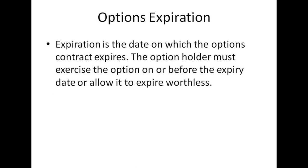The next thing is the expiration — the date on which the options contract expires. An options contract always does expire; they're not infinite contracts. You might see them as one month, three months, six months, or nine month contracts. Once they expire, the option holder must either exercise or allow it to expire worthless.